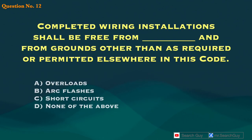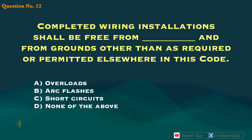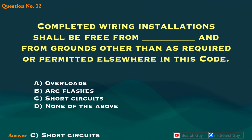Question 12. Completed wiring installations shall be free from blank, and from grounds other than as required or permitted elsewhere in this code. A. Overloads. B. Arc flashes. C. Short circuits. D. None of the above. Answer: C. Short circuits.